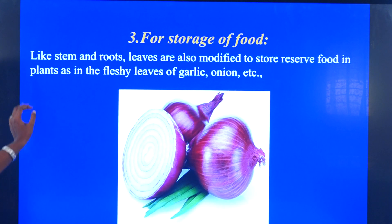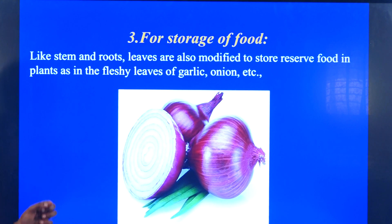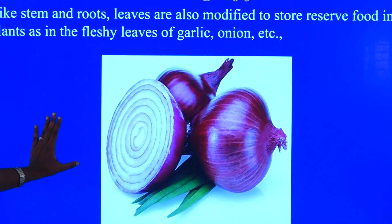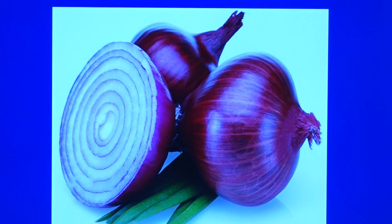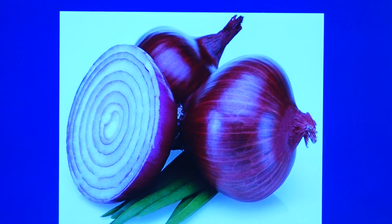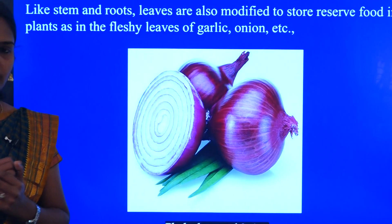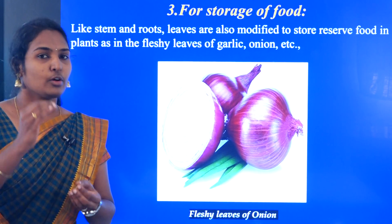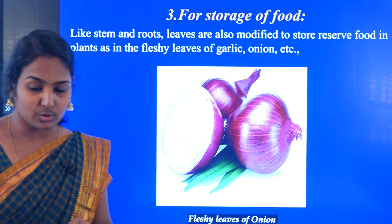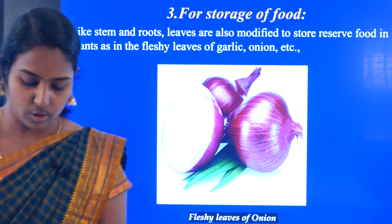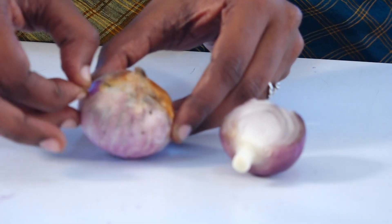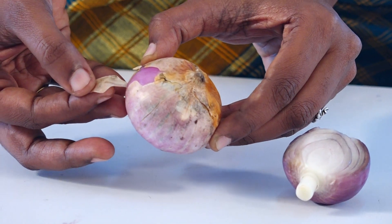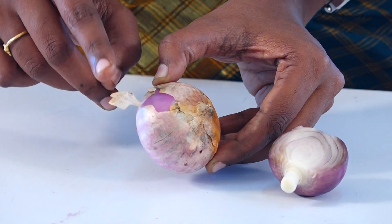Moving on to the next modification — that is for storage of food. For the storage of food there will be a modification. The best example we can see is the onion. In the onion, stem, roots and leaves are modified to store reserve food in the plant, as in the fleshy leaves of garlic and onion. The outermost dry layer we call dry leaves — these are modified leaves.